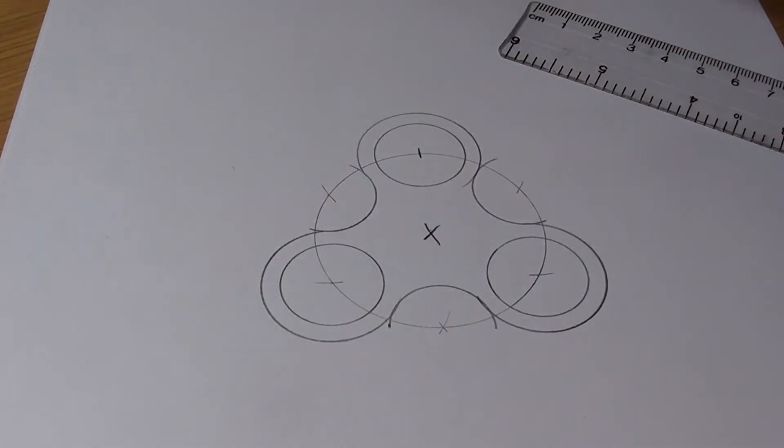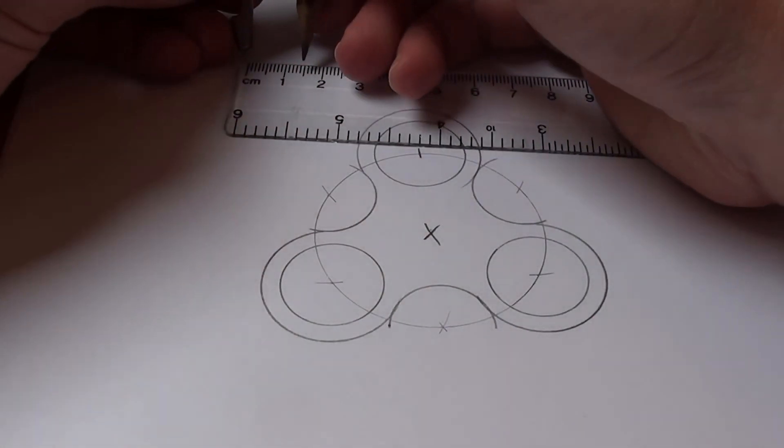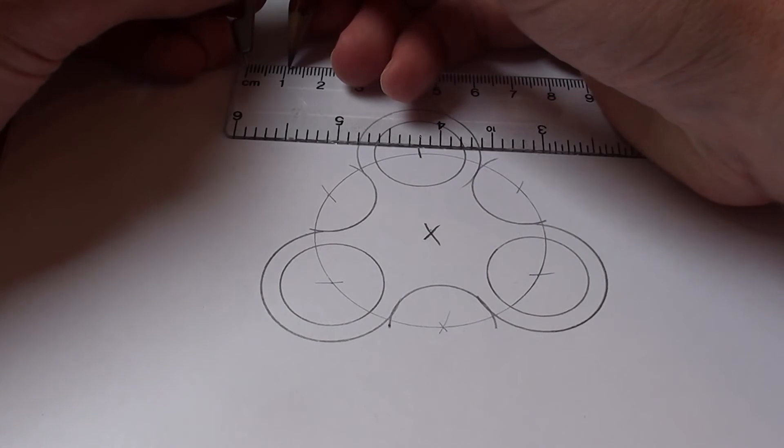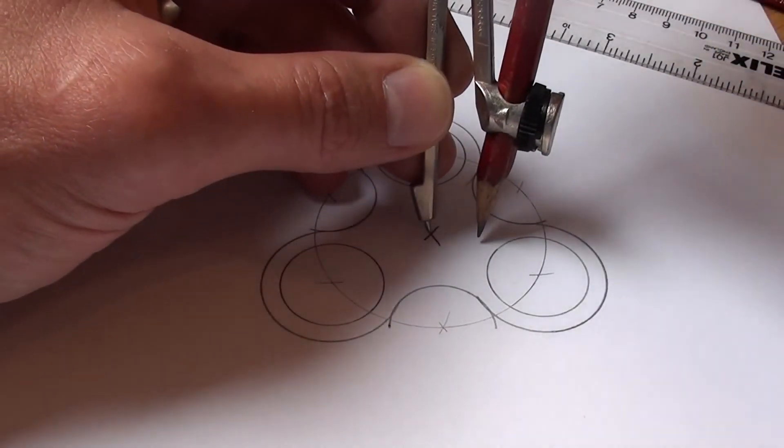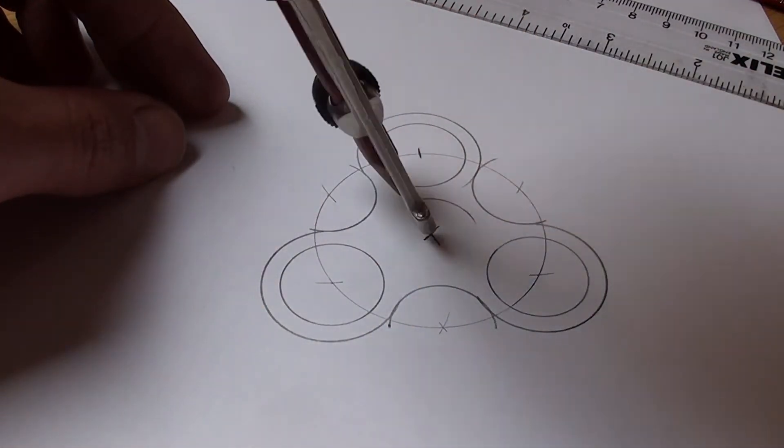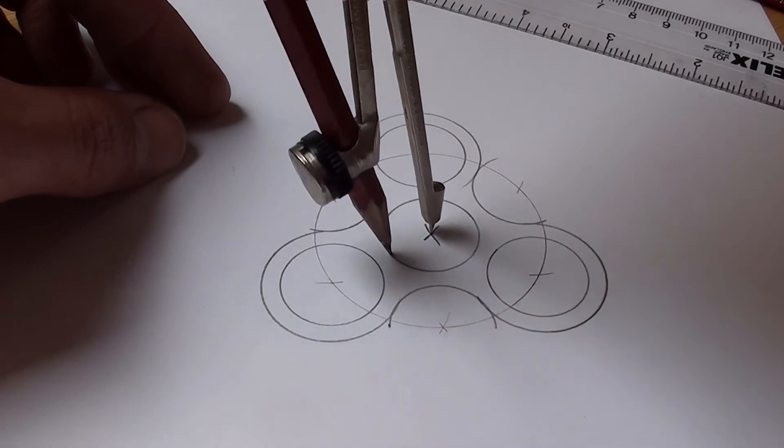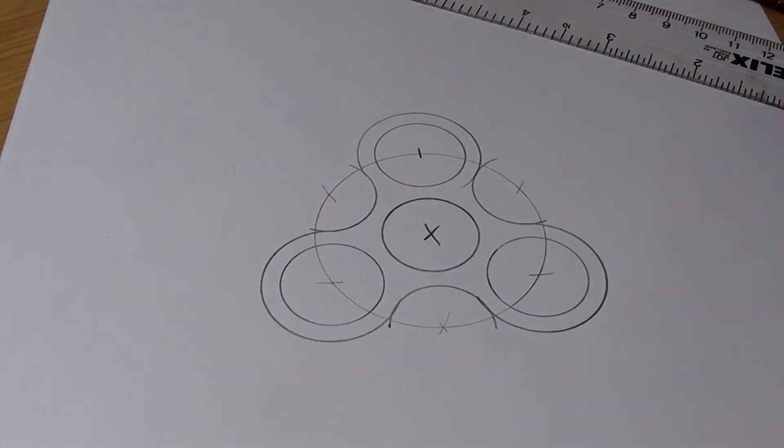And that's it, that's all there is to it. I need to draw one more bearing in the middle. Should have done that first time I had the compass set on 11mm. But let's just do that now for completeness sake. And there we are. Simple fidget spinner template.